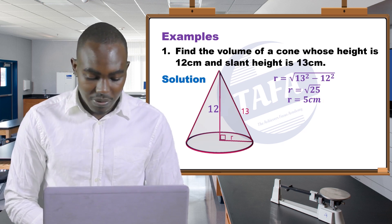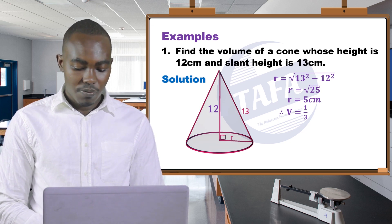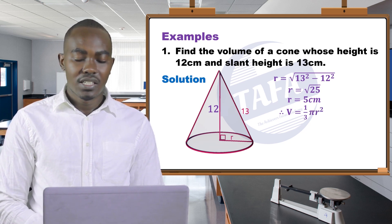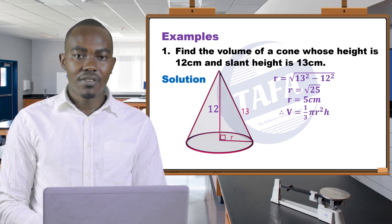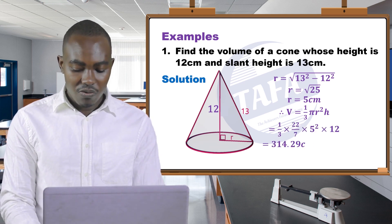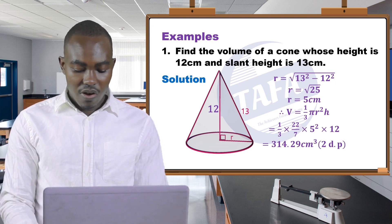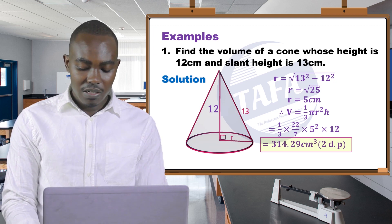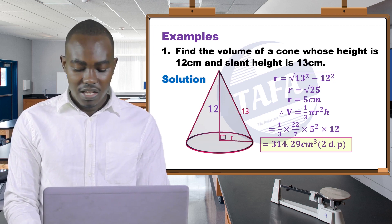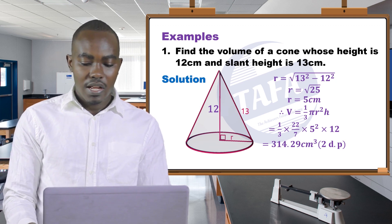Finding the square root of 25 we have 5 centimeters. So the radius is equal to 5 centimeters. Now the volume is equal to one-third times 22 over 7 times 5 squared times 12. Once you perform this you have 314.29 cubic centimeters, that is correct to two decimal places.